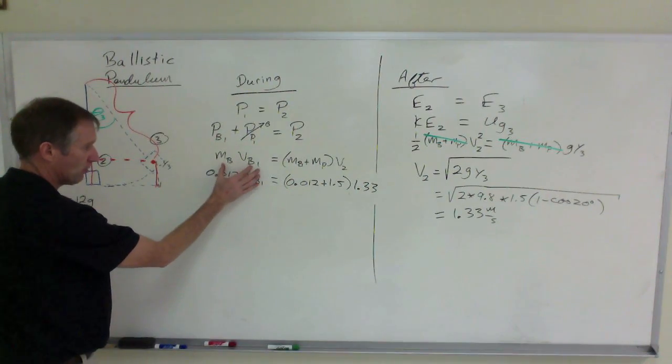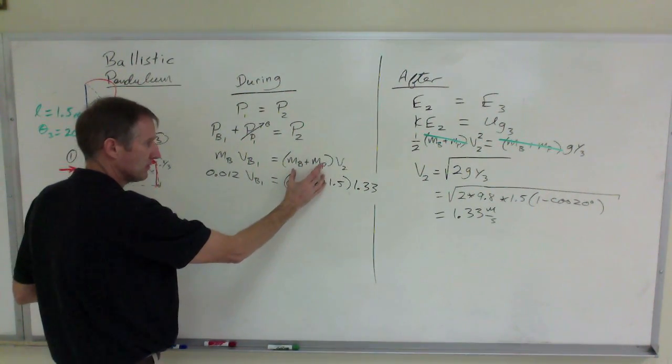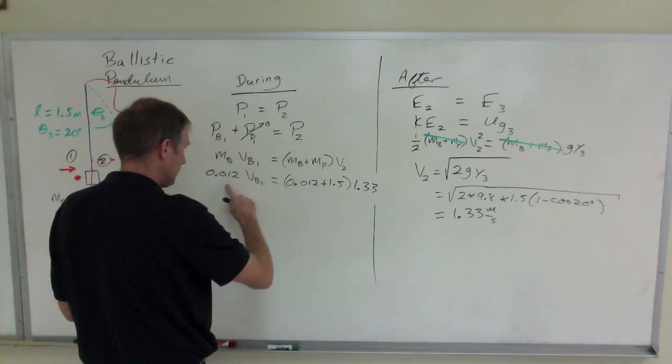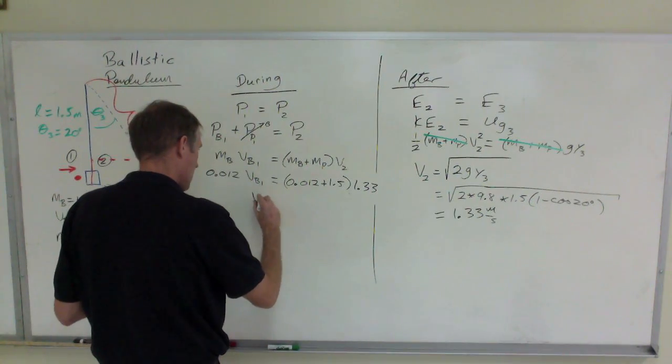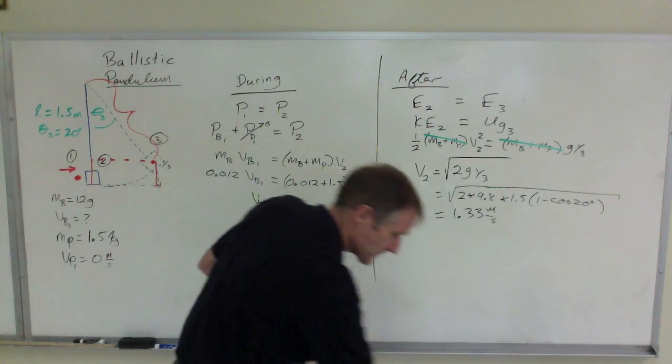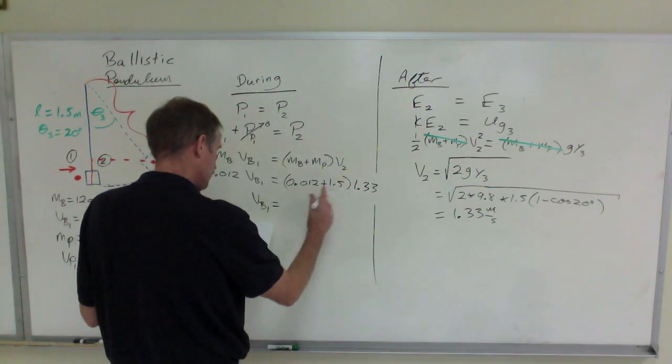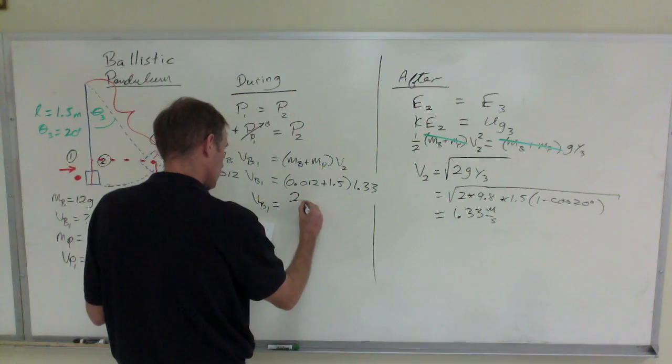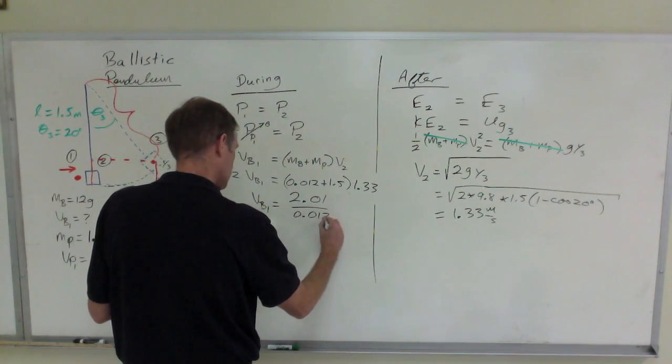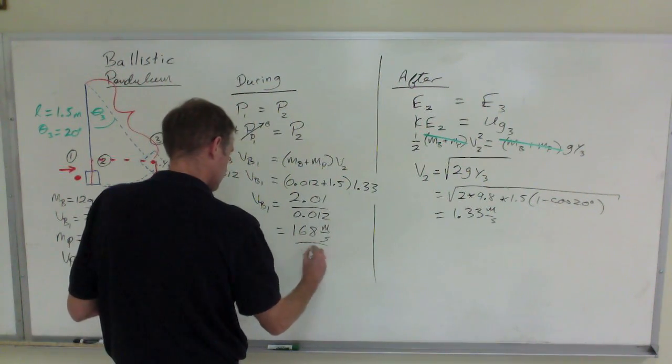Momentum before the collision, which is all due to the bullet, because that's at rest. Combined mass times velocity gives you momentum after the collision. Multiply those out and divide by that one, and you'll get the answer. That comes out to be... Well, this here is 2.01 divided by 0.012 equals 168 meters per second.